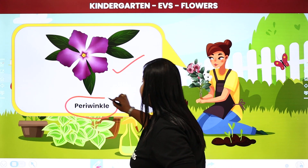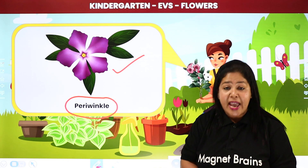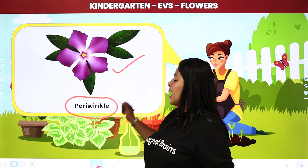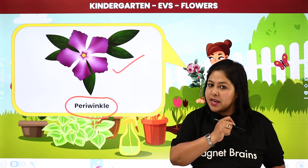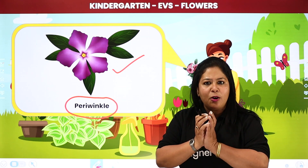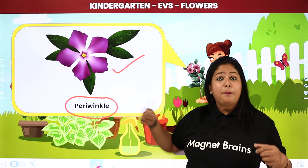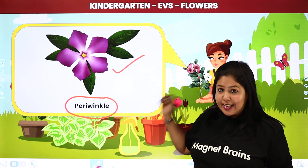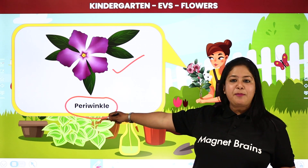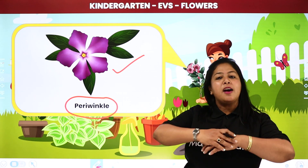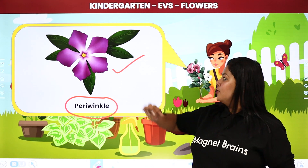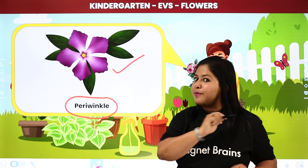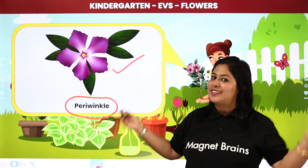And this is known as periwinkle. Kya bolte hain student hum isko? Periwinkle — P-E-R-I-W-I-N-K-L-E. Student, aapne dekha hoga — yeh jo periwinkle hota hai, yeh teen colors mein aata hai: purple, pink, and white. Aur yeh saal bhar aata hai — aap isse kisi bhi season mein dekh sakti hain. Aur isliye hame isko sada bahar bhi bolte hain. So this is known as periwinkle — sada bahar. Remember, ab jabhi bhi aap aise flower ko dekhenge, aapko yaad rahega: this is periwinkle, this is sada bahar.